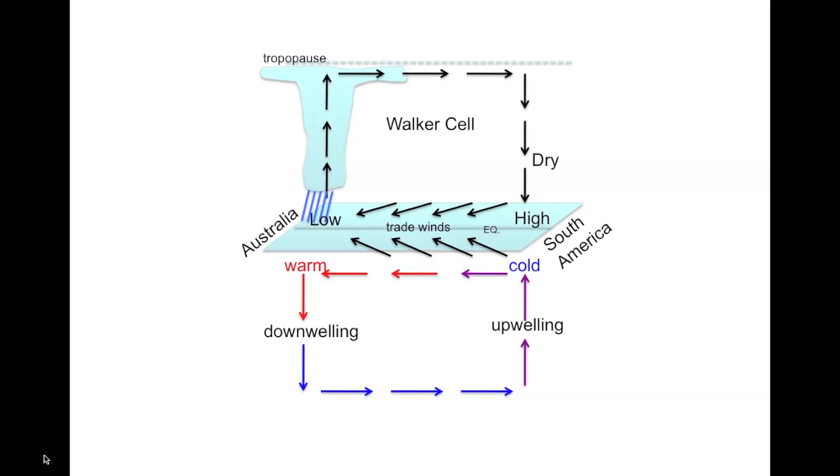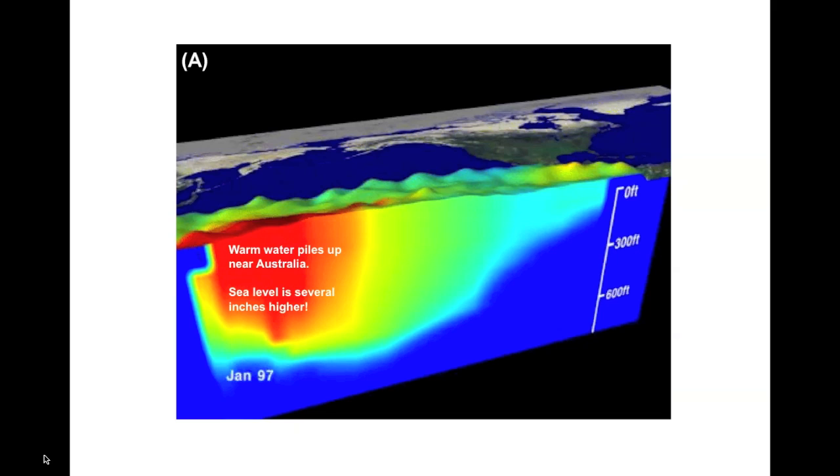What is interesting about the circulation is that all the warm surface water is blown to the west. As a consequence, the warm water actually piles up near Australia and expands due to the water's high temperature. This makes sea level several inches higher on this side of the Pacific Ocean.